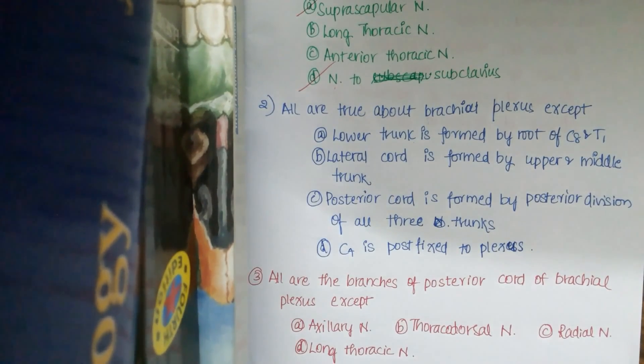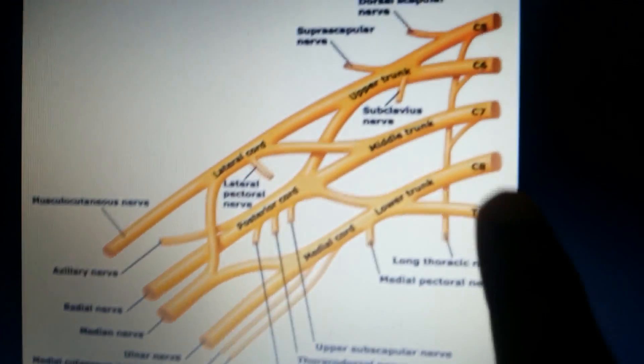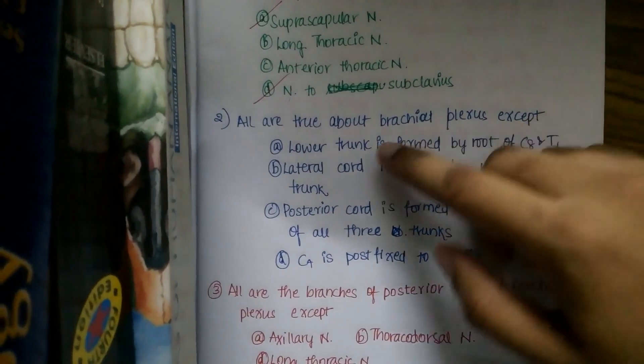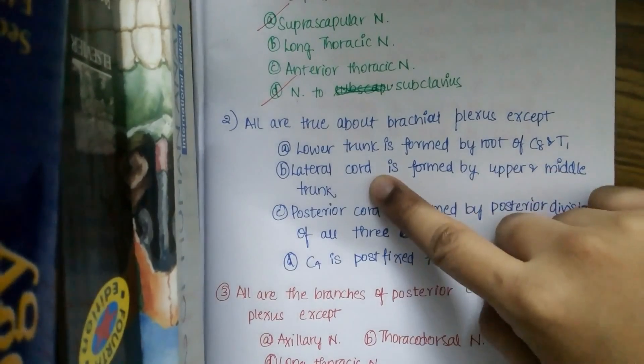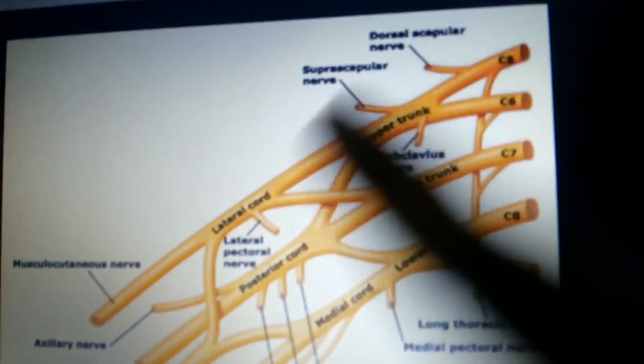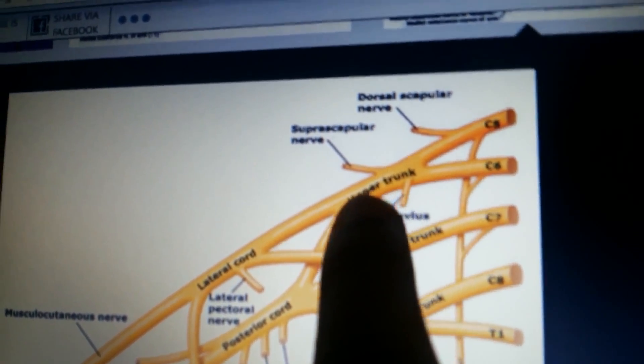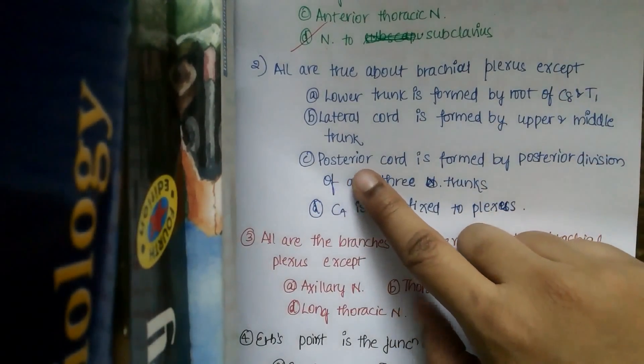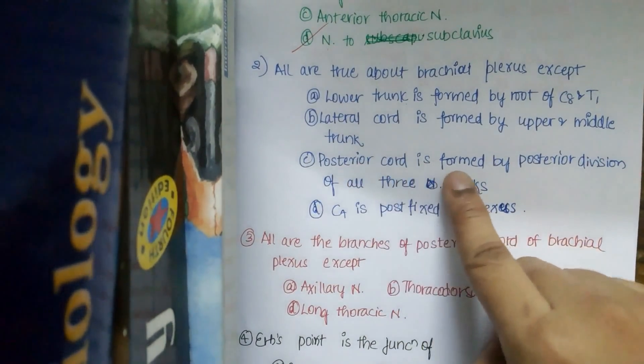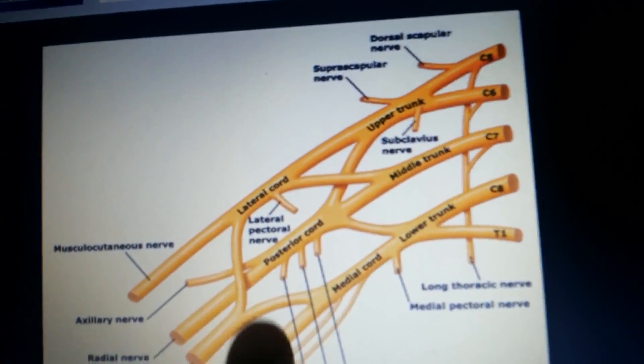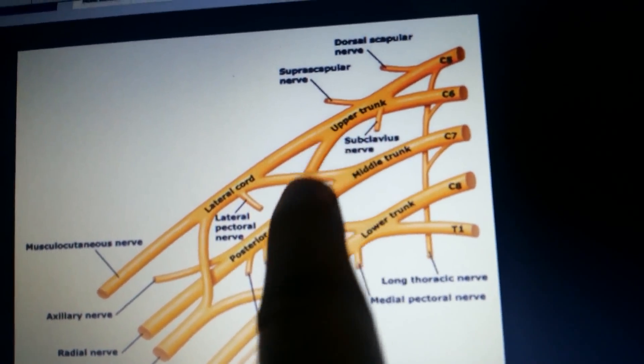Option A: Lower trunk is formed by C8 and T1 - that's true, as you've seen. Option B: Lateral cord is formed by upper and middle trunk - you can see the lateral cord is formed by upper trunk and middle trunk, so this is true. Option C: Posterior cord is formed by posterior divisions of all three trunks - the posterior cord is formed by all three divisions: upper trunk, middle trunk, and posterior trunk divisions.